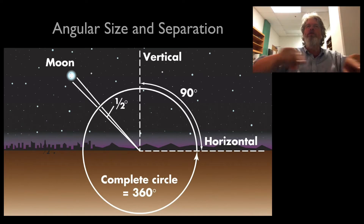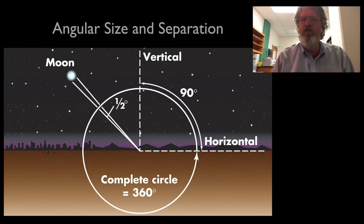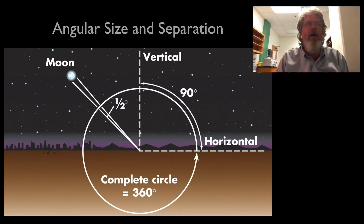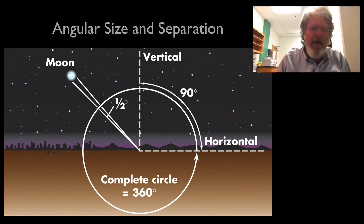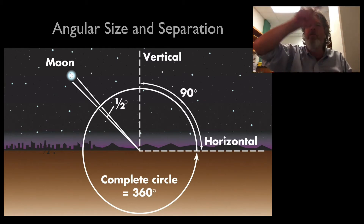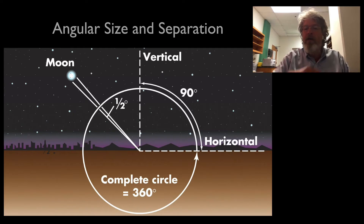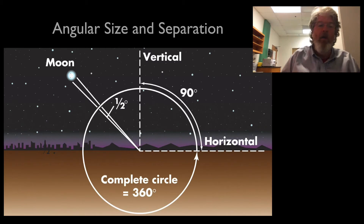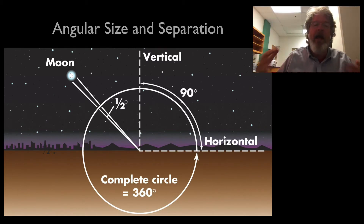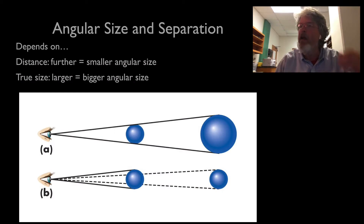The full sky all the way around is 360 degrees — that comes from the Babylonians, who had about 360 days in a year and used a base-60 number system. Each degree can be broken into smaller units. The moon, for example, spans about half a degree from top to bottom in the sky.